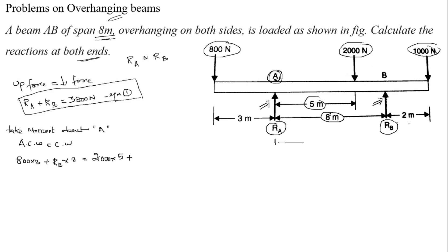For the 1000 N force, the total distance from point A is 8 plus 2, which equals 10 meters. So 1000 into 10 meters. Now: RB into 8 equals 2000 into 5, which is 10,000.